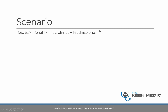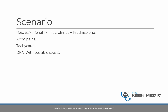Transplants are very valuable both to the patient and to the transplant team, and any insult or concern that might damage the transplant is relevant to all of them. That's why you need to be extremely vigilant when dealing with a renal transplant patient. Back to the scenario: Rob, a 62-year-old man with a renal transplant on tacrolimus and prednisolone, presents with abdominal pain, tachycardia, and tachypnea, and now appears to have DKA with possible sepsis.